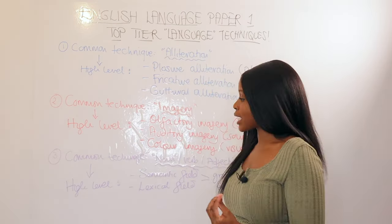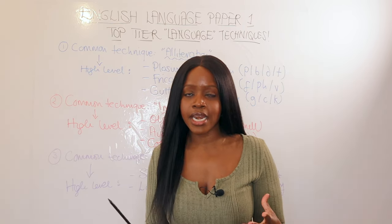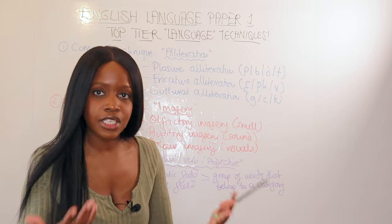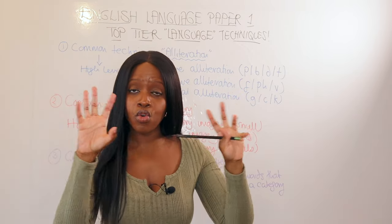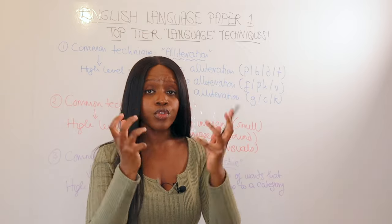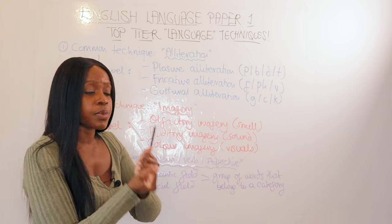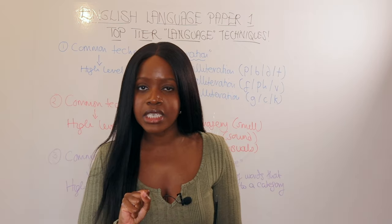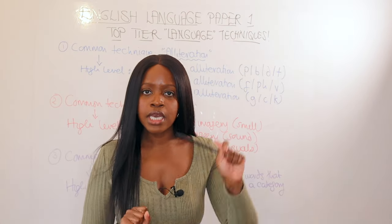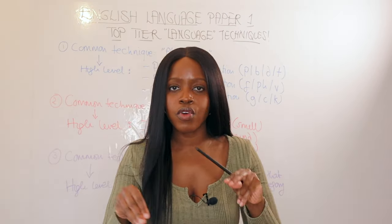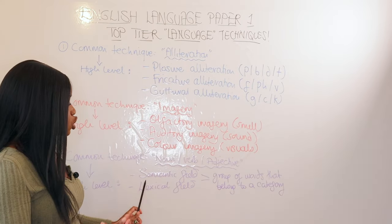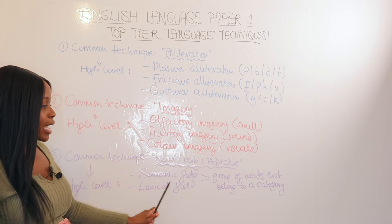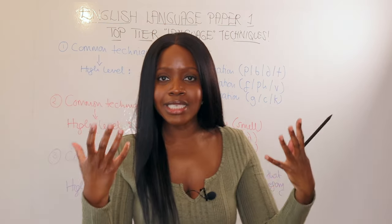The third and final common language technique is the use of nouns, verbs, and adjectives. These are very common, but rather than just pointing out a single noun or verb, look for a pattern or trend: do a group of nouns, verbs, or adjectives belong to a semantic field or lexical field? For example, if a text mentions a rose, a daffodil, and a daisy, instead of saying 'the writer uses these nouns,' say the writer uses these nouns which belong to the semantic field — or lexical field — of flowers.